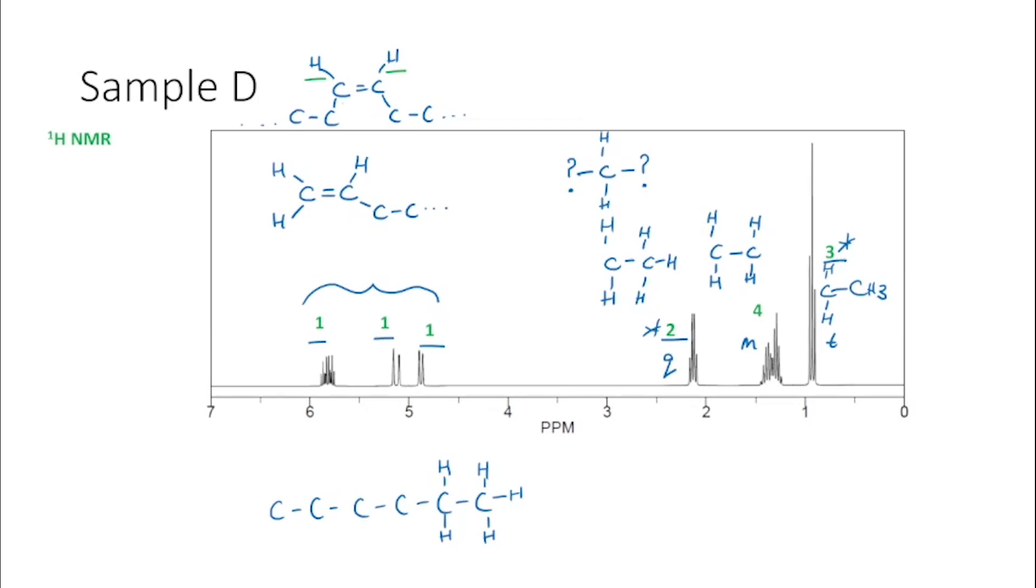And you can see we have one and one. But we have three, so here's a little trick. We have, it's probably a terminal. But these two protons here, because of the restricted rotation around the alkene bond, are actually in different chemical environments.